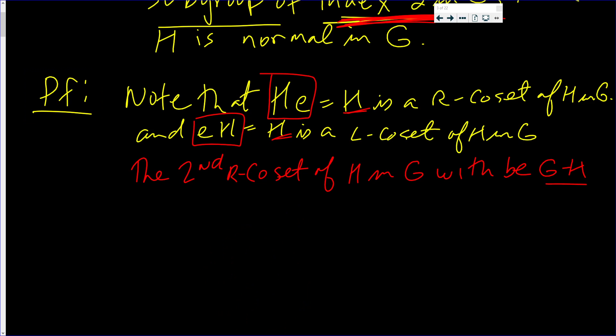But here's the good part: The second left coset of H in G will also be G minus H.